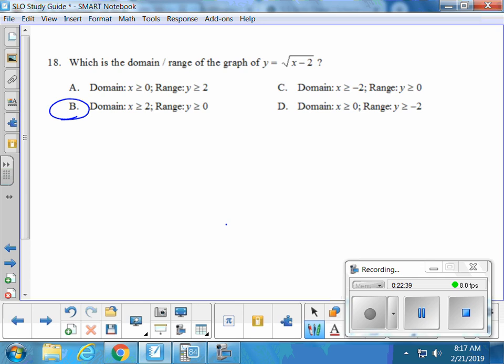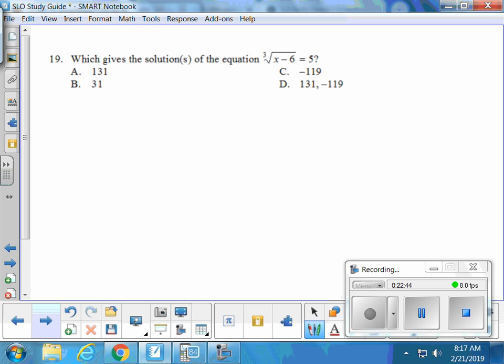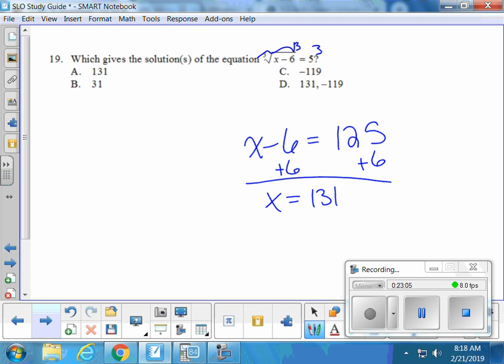We will end on 19. How are we going to start this? Cube both sides. Cube both sides and cancel the cube root. So X minus 6 equals 5 cubed. Isn't 5 cubed 125? Yes. And then finish by adding 6. So 131. That was always my track number. That's so lucky. 131 all four years. That's my favorite number.